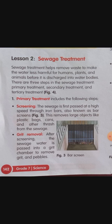Sewage treatment helps remove waste to make the water less harmful for humans, plants, and animals before it is discharged into water bodies. There are three steps in sewage treatment: the first one is primary treatment, the second is secondary treatment, and the third is tertiary treatment.